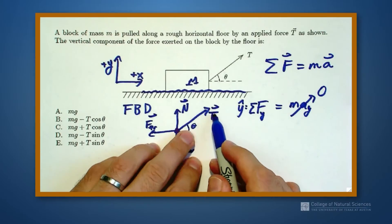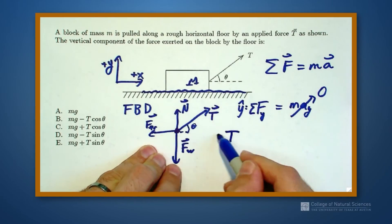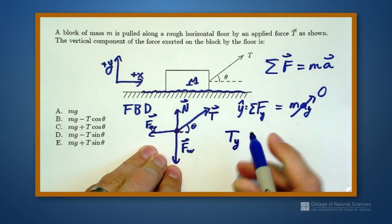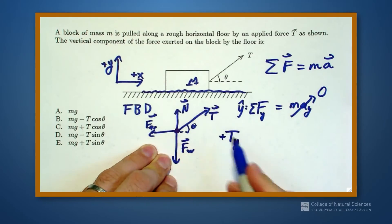So the first force I come to is the tension force. And I look and this tension force has both a horizontal and a vertical component. So I want just the vertical component, it's a positive value because of what my picture shows, but I want the vertical component of tension.